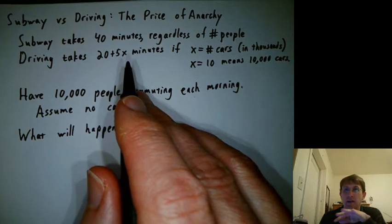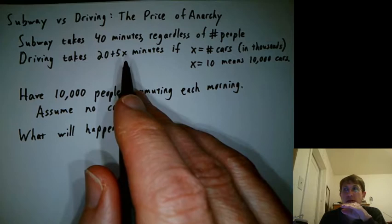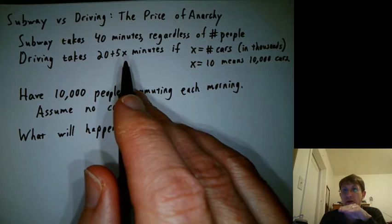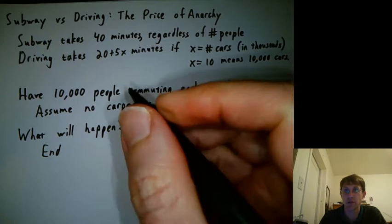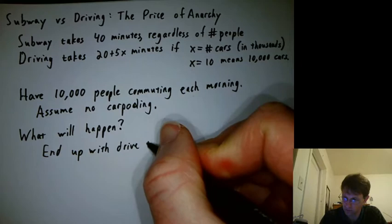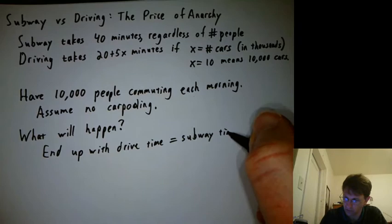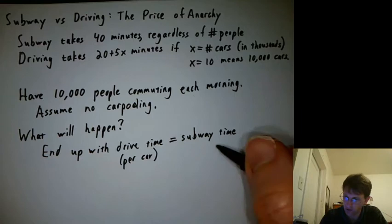Eventually enough people will decide to do one thing or the other so that the drive time takes 40 minutes, and no one on the subway will want to switch to driving because they wouldn't get there any faster. And no one driving would want to switch to the subway. So we'll end up with the drive time equal to the subway time.